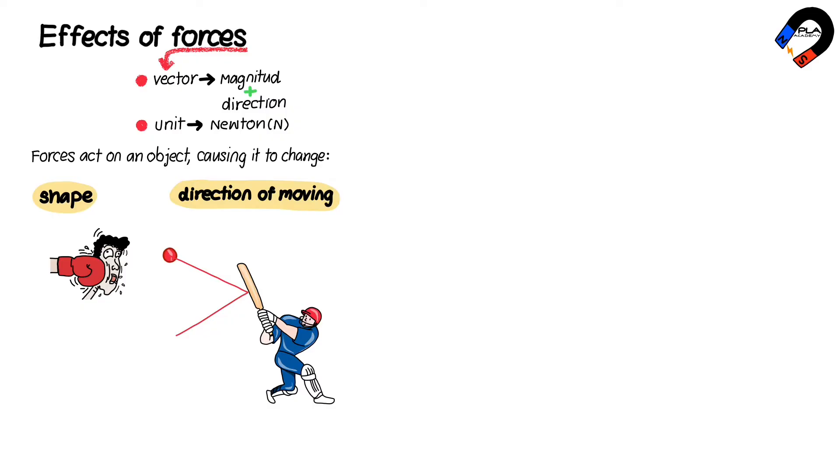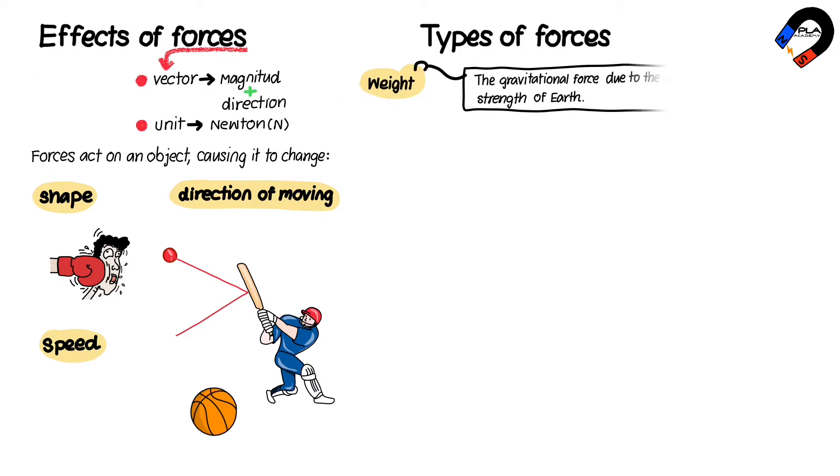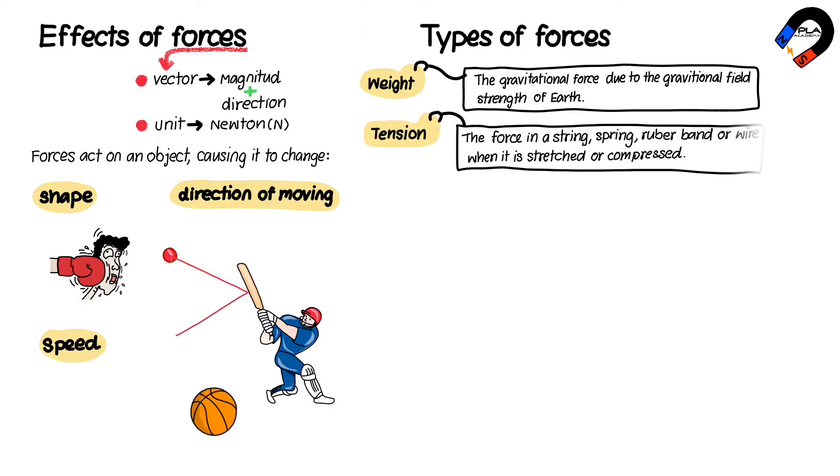There are many different types of forces including: 1) Weight is the gravitational force due to the gravitational field strength of Earth. Its direction is always downward. 2) Tension is the force in a string, spring, rubber band, or wire when it is stretched or compressed.